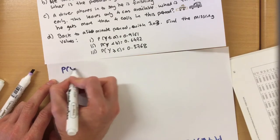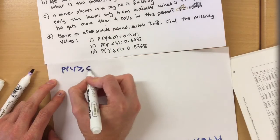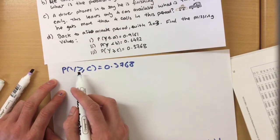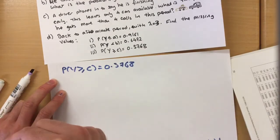So probability that Y is bigger than or equal to c is 0.5768. Now as it's a bigger than, we look at the reverse case.